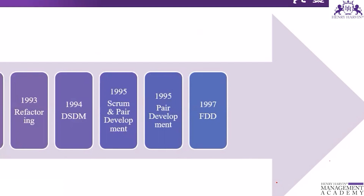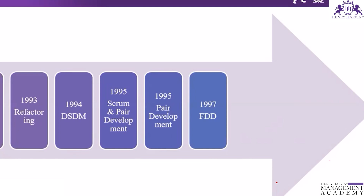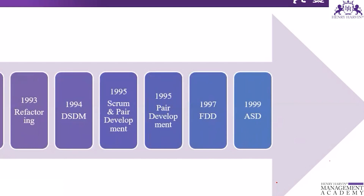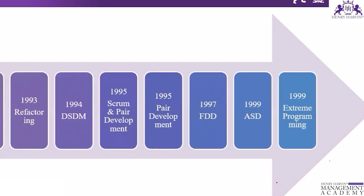In 1997, Feature Driven Development (FDD) was introduced by Jeff DeLuca, Peter Coad, and John Kern. FDD states that every functionality within a project should be done in a small chunk of work, known as a feature. In 1999, Adaptive Software Development (ASD) was introduced by Jim Highsmith.